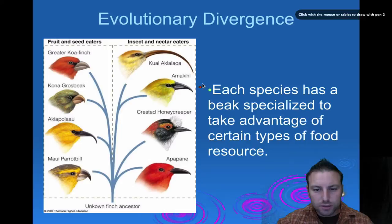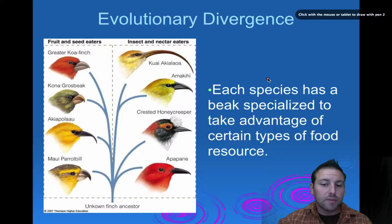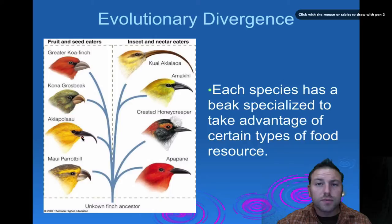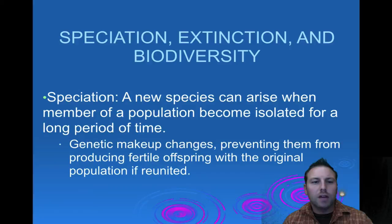We also have evolutionary divergence, sometimes called adaptive radiation, where each species evolves in a slightly different way to take advantage of certain types of food. You can see the finches here — their beaks are each a little bit different so they can utilize food in a different way.